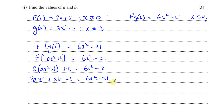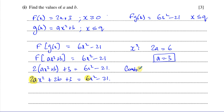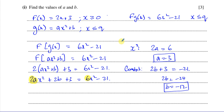To find a and b, we compare coefficients. Looking at the x² coefficients: on the left we have 2a, on the right we have 6, so 2a = 6, which means a = 3. Comparing constants: 2b + 3 = −21, so 2b = −24, giving b = −12. So a = 3 and b = −12 — that's the answer to part 1.